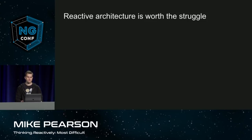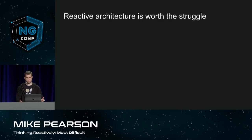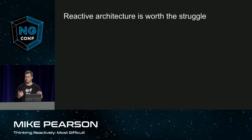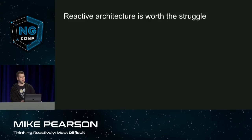I think it's powerful to have one abstraction for asynchronicity that you can learn and then just always use. We are struggling with it — there are a lot of imperative habits, and it's a lot to adjust to at once with RxJS if you're going to use it everywhere, which I don't recommend doing at first. But I think we will learn the reactive habits, and as a result we will see an entire category of bugs go away.